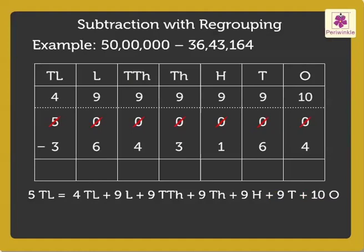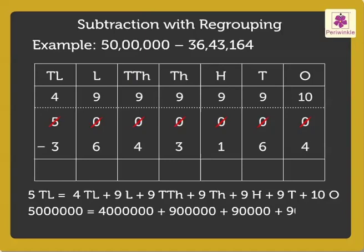Thus, we get 50 lakhs is equal to 40 lakhs plus 9 lakhs plus 90 thousand plus 9 thousand plus 9 hundreds plus 90 plus 10. Now, subtract the ones, i.e. 10 minus 4 is equal to 6. Subtract the tens, i.e. 9 minus 6 is equal to 3.